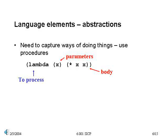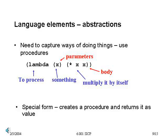The way to think about this lambda expression is that it is going to capture a common pattern of computation in a procedure — it will actually build the procedure for us. The way to read the expression is as follows: to process something, multiply it by itself and return that value. So this particular lambda expression captures the process of squaring. It says, if you give me a value for x, I will return the value of multiplying that thing by itself.